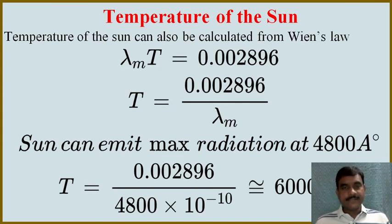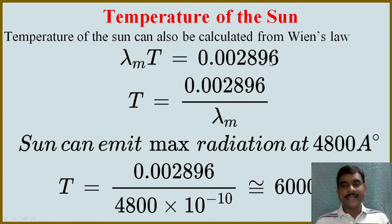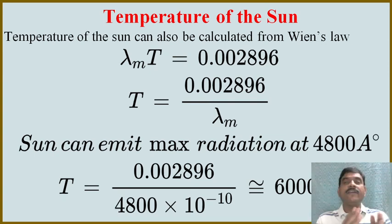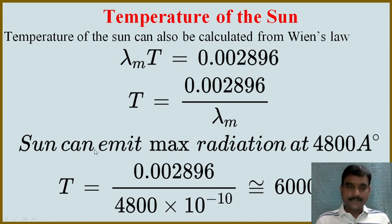Similarly, we are going to obtain the temperature of the sun by using Wien's displacement law. Wien's displacement law states: λm × T = constant, where the constant is called Wien's constant, with a value of 0.002896 meter·Kelvin. Here λm is the wavelength corresponding to the maximum energy emission from a black body.